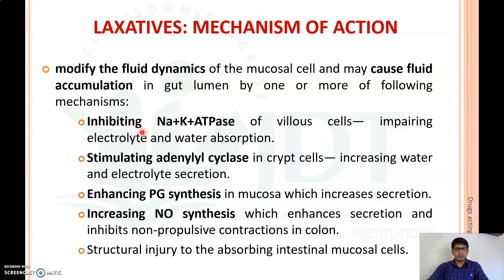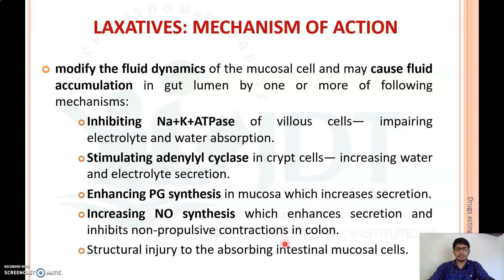The mechanisms include: inhibiting Na+/K+ ATPase on villus cells, thereby impairing electrolyte and water absorption; stimulating adenylyl cyclase in crypt cells, thereby increasing water and electrolyte secretion; increasing prostaglandin synthesis in the mucosa, which increases secretions in the GI tract; increasing nitric oxide synthesis, which enhances secretion and inhibits non-propulsive contraction in the colon; and causing structural injury to the absorbing intestinal mucosal cells.